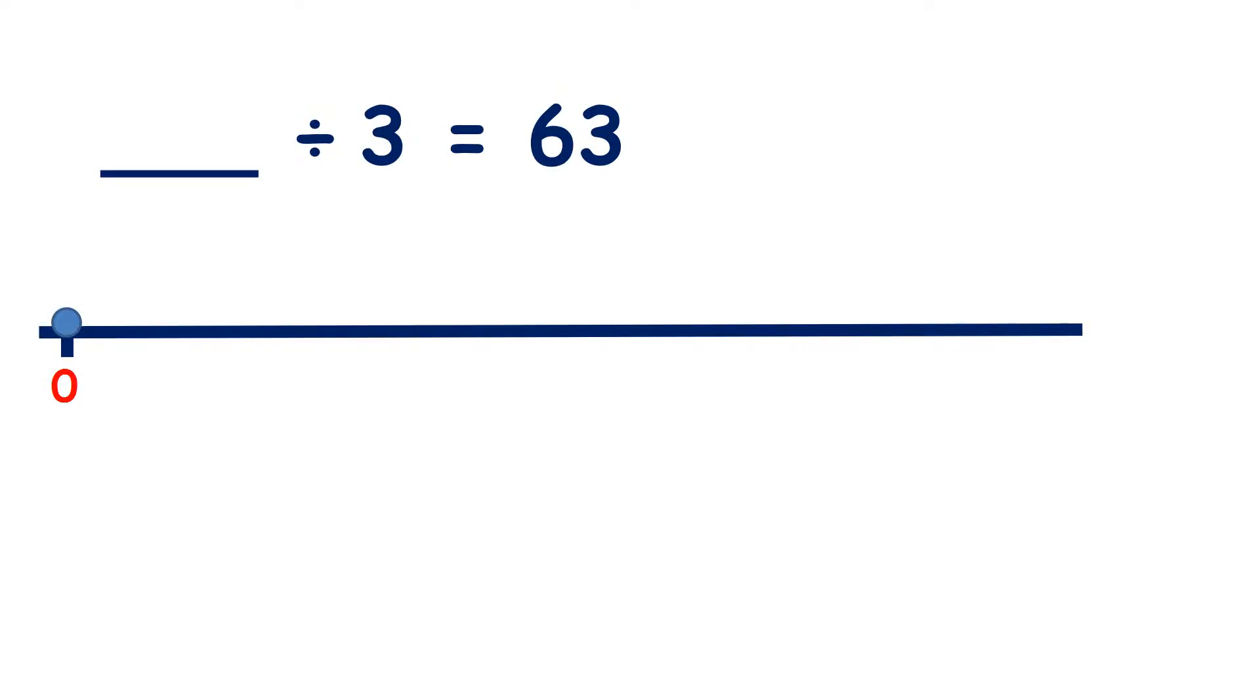We have something divided by 3 equals 63. So we have a number, and if we divide that number into groups of 3, we have 63 groups. So let's make 63 groups of 3.